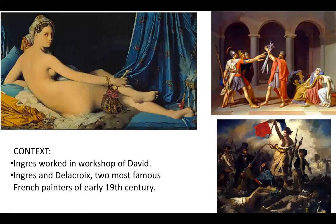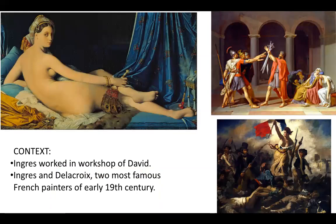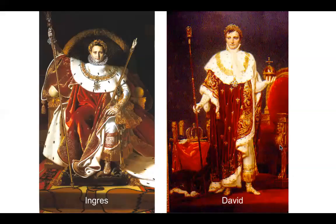Ingres worked in the workshop of David, who was a favorite of the academy with his neoclassical history painting. During the early 19th century, Ingres and Delacroix were probably the most famous French painters. Delacroix, of course, painted Liberty Leading the People — that Romantic painting. You can see the difference between Ingres and his master David in the smoothness of his brushwork. He's clearly really concerned with accuracy.